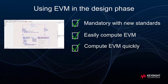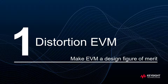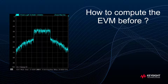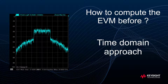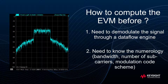Let's start with the distortion EVM. Distortion EVM is a way to estimate the error vector magnitude out of nonlinear simulations with envelope, but without the need of an external system simulator. In traditional approaches, EVM is computed in time domain — that's the case for spectrum analyzers and R-Links with SystemVue. That's pretty accurate, but the prerequisite is that the output signal must be demodulated before the time domain EVM processing. That implies knowing the full numerology of the input source to get a proper demodulation and a data flow engine to produce the results.